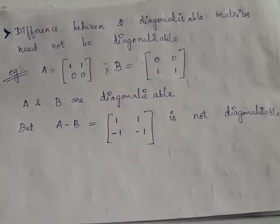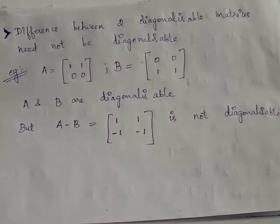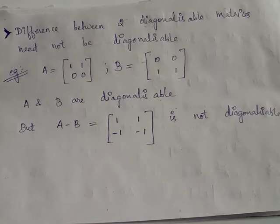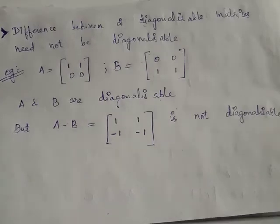But when we take the difference A minus B, we have [[1,1],[−1,−1]], which is not a diagonalizable matrix. So in general, the difference between two diagonalizable matrices need not always be diagonalizable.